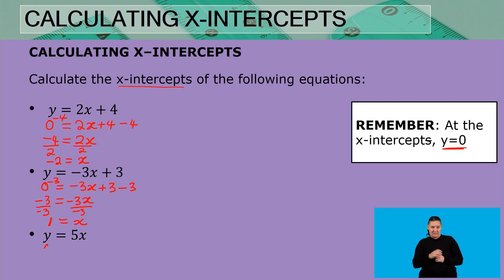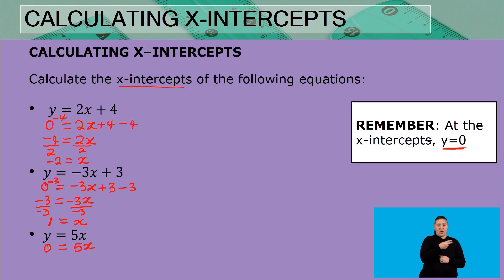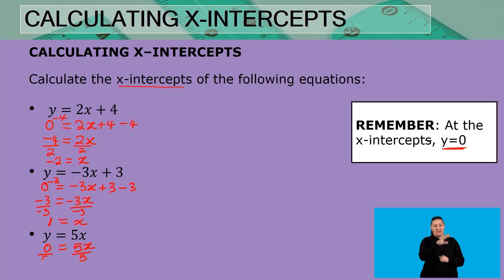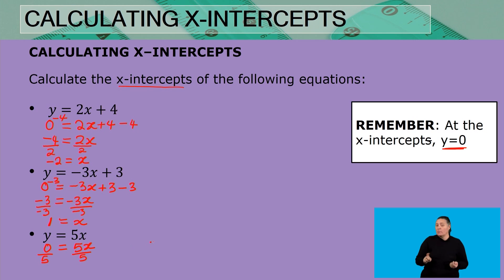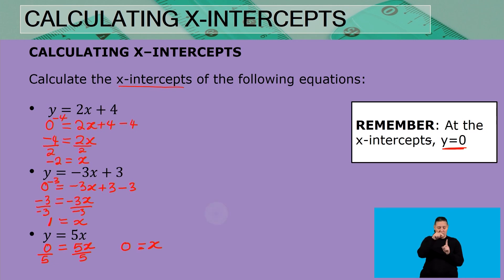For the last one, y = 5x. We know y equals zero, so zero = 5x. The multiplicative inverse of five is one-fifth, the same as dividing by five. Dividing both sides by five leaves us with x equals zero, meaning that line passes the x-axis at zero.